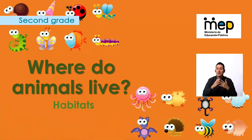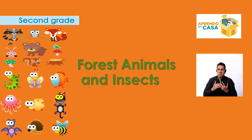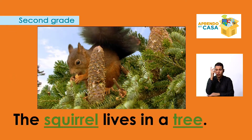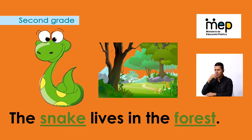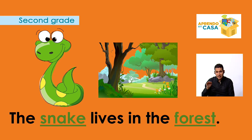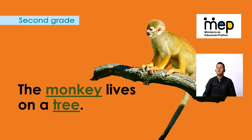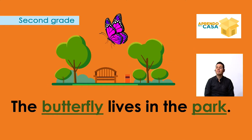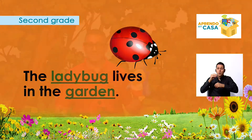Where do animals live? Some animals — like forest animals and insects — live in different places. For instance, the squirrel lives in a tree. The snake lives in the forest. The fish live in water. The monkey lives in a tree. The butterfly lives in the park. And the ladybug lives in the garden.